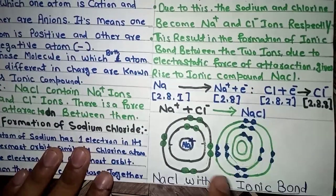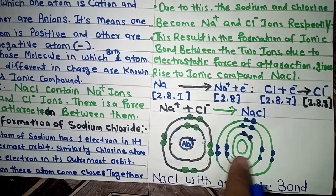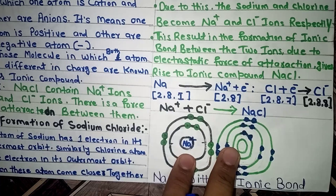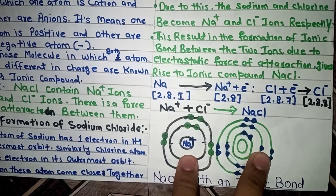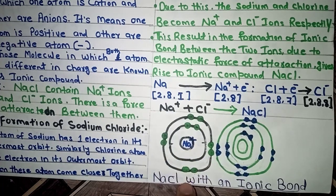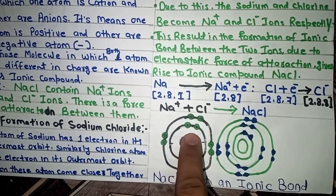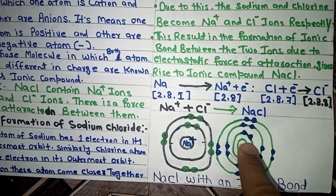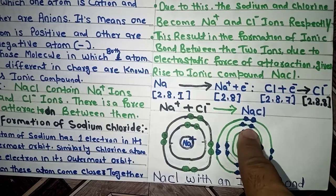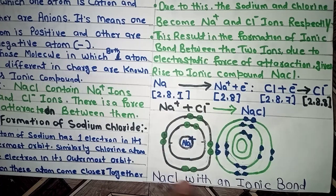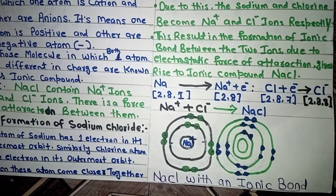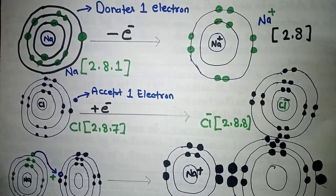Looking at the shell-wise structure of sodium chloride: in the final structure, sodium has 2 electrons in the first shell and 8 electrons in the second shell — 10 electrons total. Similarly for chlorine: 2 electrons in the first shell, 8 in the second, and 8 in the third. This is the ionic compound sodium chloride. Next we will look at the shell-wise formation in detail.